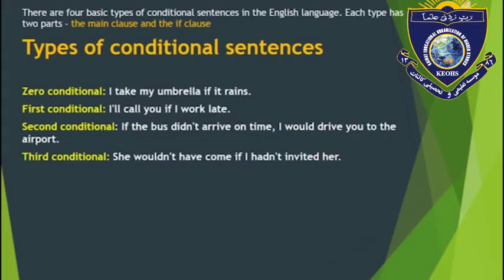For example — first conditional: 'I take my umbrella if it rains.' First conditional: 'I will call you if I work late.' Second conditional: 'If the bus didn't arrive on time, I would drive you to the airport.' Third conditional: 'She wouldn't have come if I hadn't invited her.'